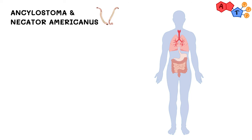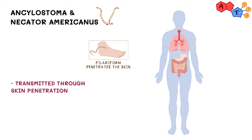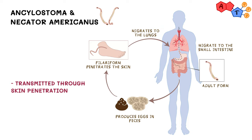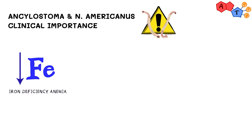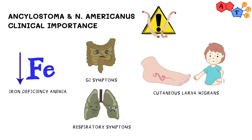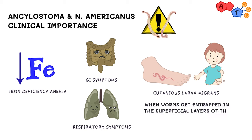Unlike the previous two nematodes, Ankylostoma species and Necator americanus are transmitted mainly through skin penetration, not through the fecal-oral route. Their larvae, known as filariform, can penetrate the skin — usually the foot — to invade the body. Using the blood as a vector, these larvae travel to the lungs to mature, and then subsequently migrate to the small intestine, where they start sucking blood — basically acting like a vampire. These worms often stay for a long time in the intestine sucking blood, so patients usually develop iron deficiency anemia due to chronic blood loss. Cutaneous larva migrans is another complication that occurs when larvae penetrate the skin but get entrapped in the superficial layers away from blood vessels.